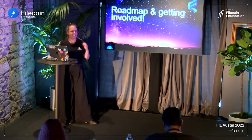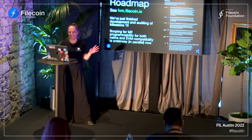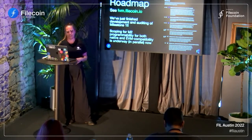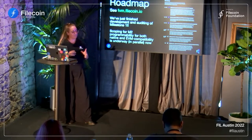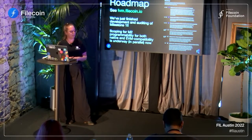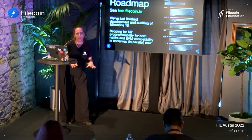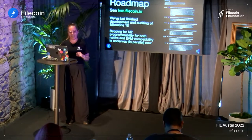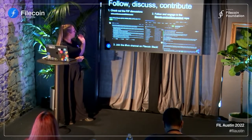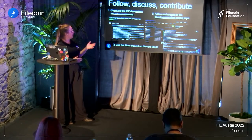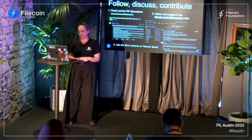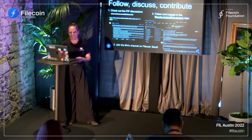When can we start building on this? There's a roadmap up on the website at fvm.filecoin.io. We've recently shipped and audited Milestone 1. The core team and ecosystem is busy scoping out Milestone 2, which covers the programmability part on both native Filecoin and EVM-compatible Filecoin. If you want to get involved, check out our FIP discussions on GitHub, go to the FVM project repo, or join the #FVM channel on our Slack.